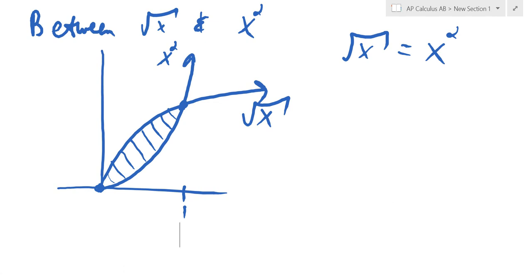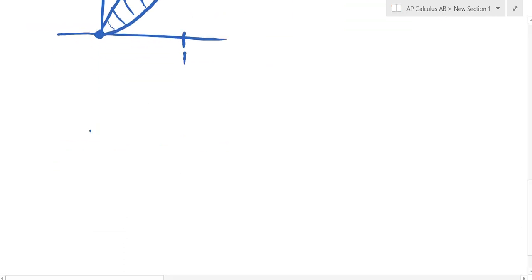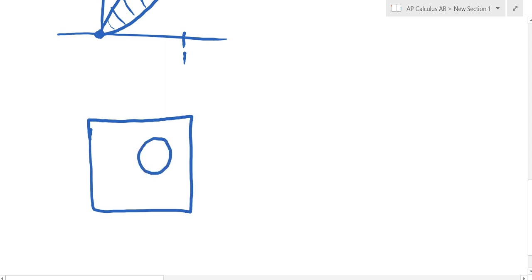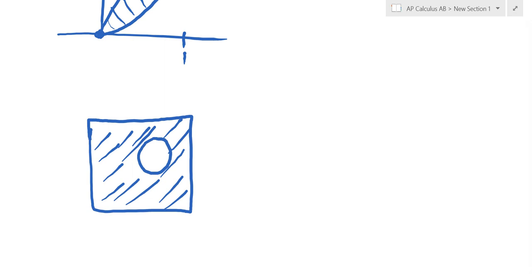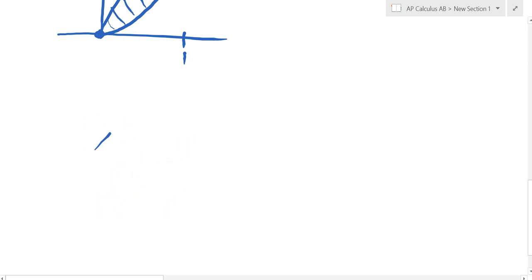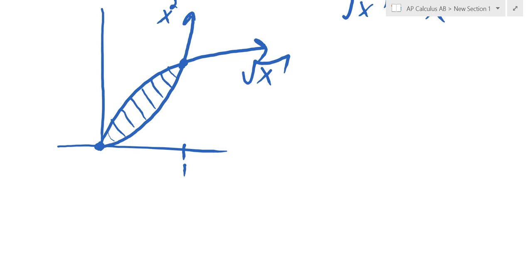The way we find area between curves uses an integral, but let's go back to geometry. Remember when they'd say find the area of the square except there's a hole in it — like Swiss cheese? You'd find the area of the whole square and subtract the area of the circle. We're going to use that same idea. I'll first find the area under the bigger function — root x, because it's on top — and subtract off the area under the lower function, x squared.